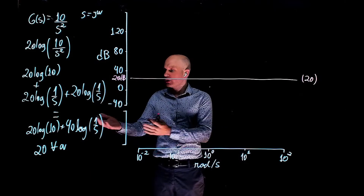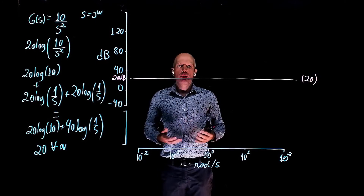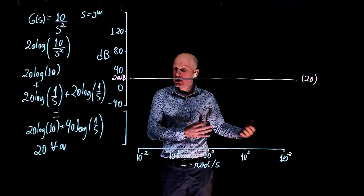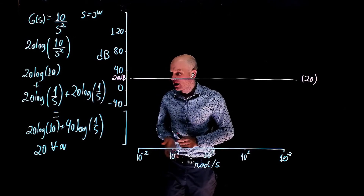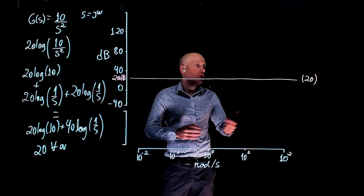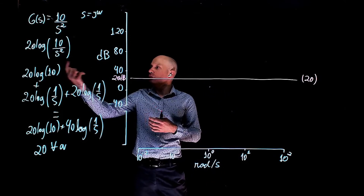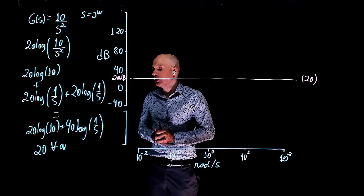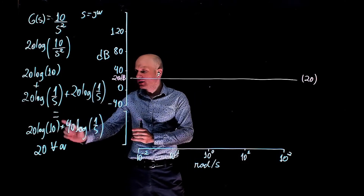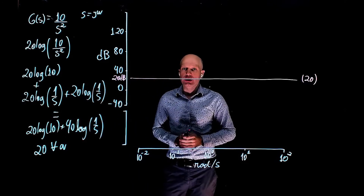The next element is 40 log of 1 over s. There are two poles at the origin. A single pole at the origin would result in a line that decays by 20 decibels per decade — that is, every time we multiply the frequency by a factor of 10, the Bode plot goes down by 20 decibels. But here, because we have two poles at the origin, this slope becomes simply 40 decibels per decade.